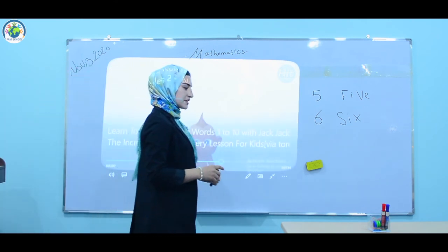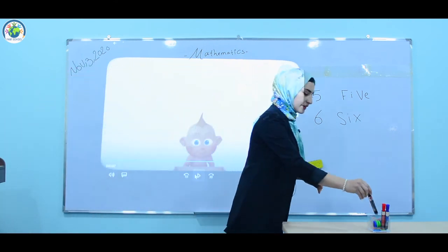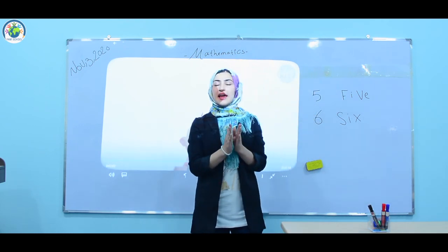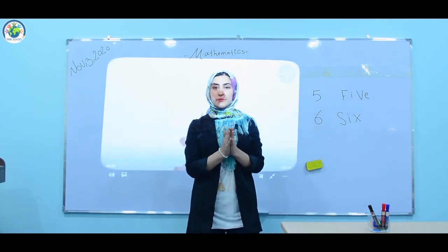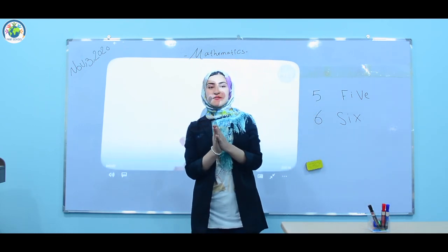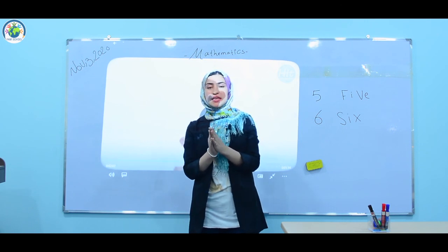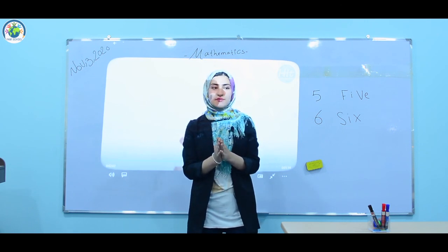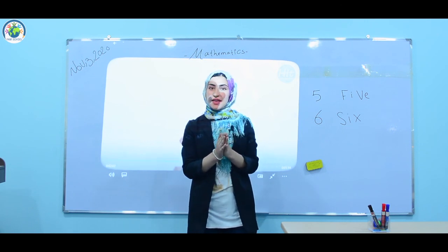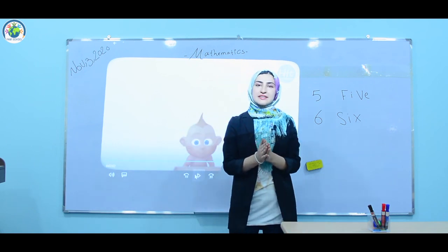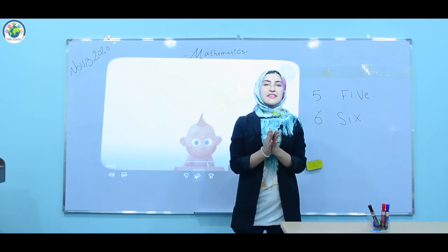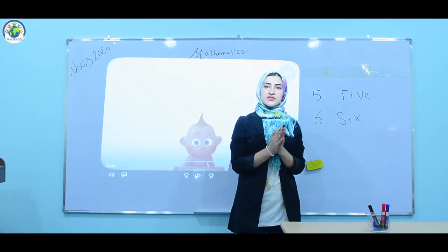Good job. That was all for today. We learned how to spell and write numbers five and six, which are F, I, V, E — Five — and S, I, X — Six. That was all for today. I hope you have enjoyed it. Bye bye!